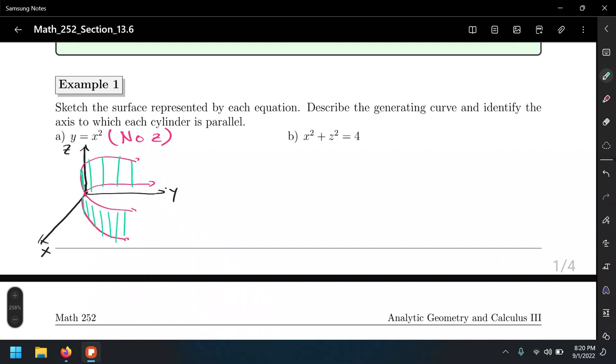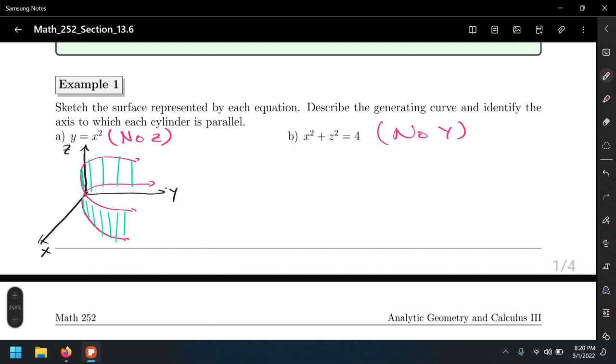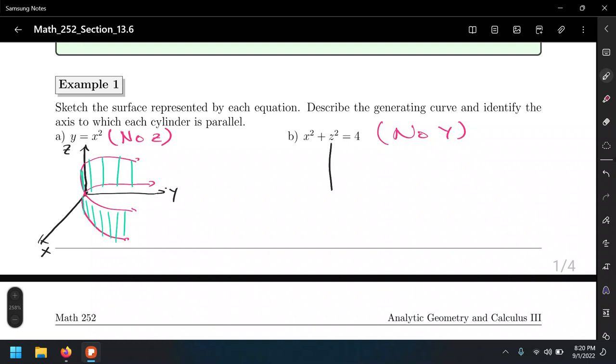For the next example, we have x squared plus z squared. Okay, what is this? Number one, which variable is missing? Y. So no y in this case. Well, that means we would be working on the x, z plane. So in this case, x, y, and z.